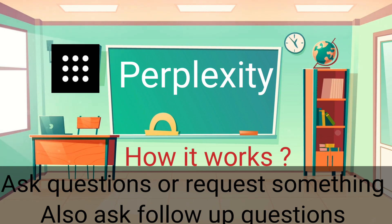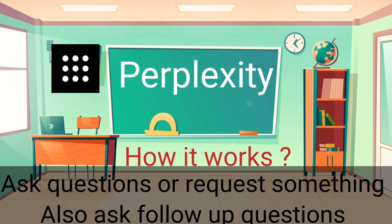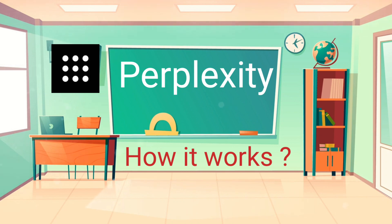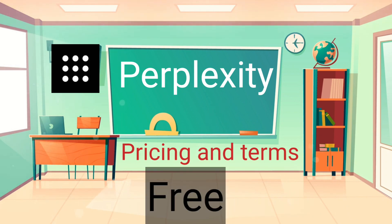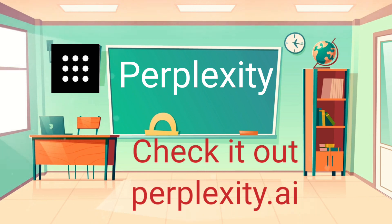You will see the concise version at first, but when you click to see a detailed response, it will also list the sources where it drew its information and other related topics. You can ask follow-up questions in a conversational manner, like ChatGPT. Pricing and terms: it's free of cost. Check it out at perplexity.ai.